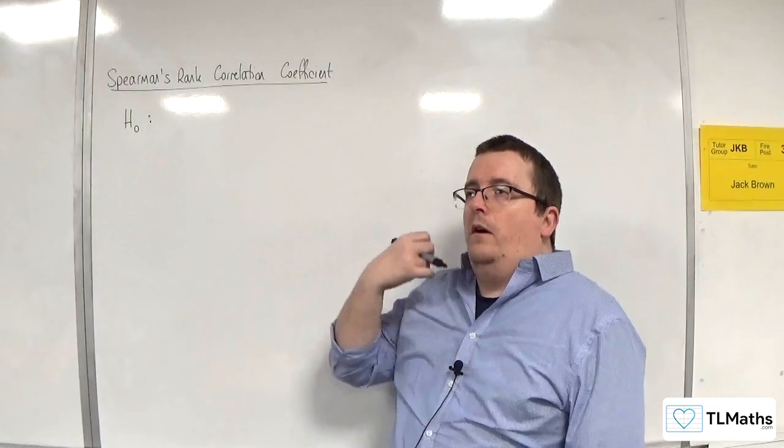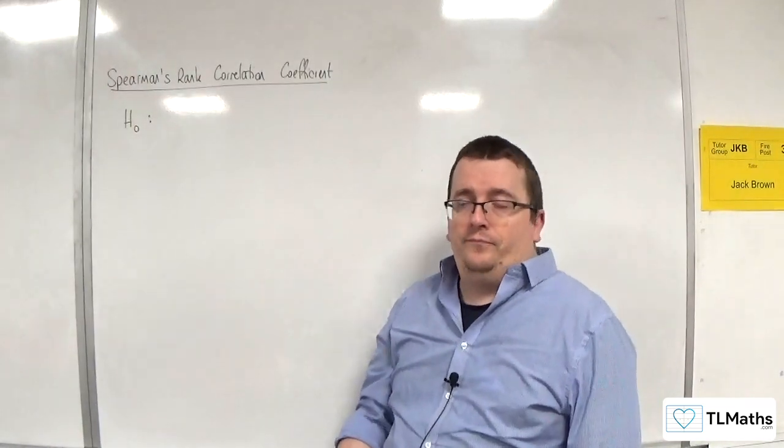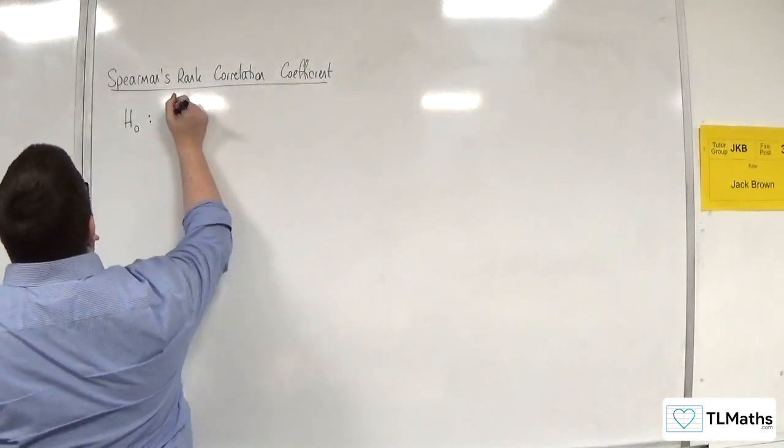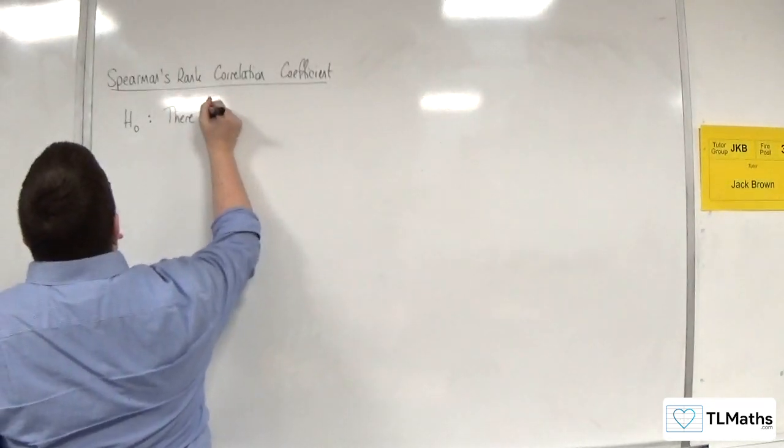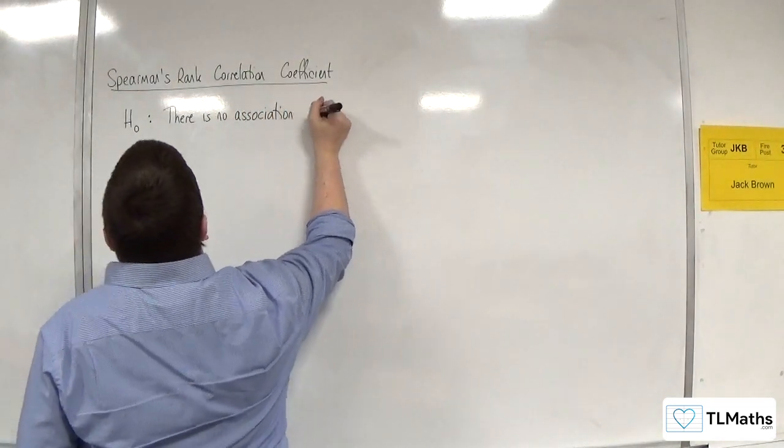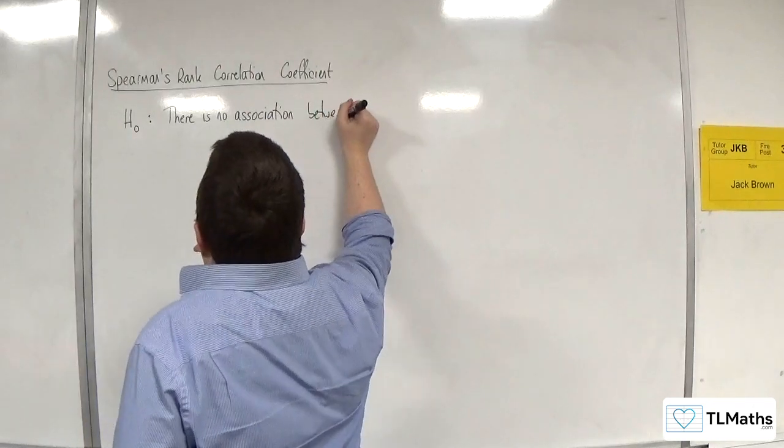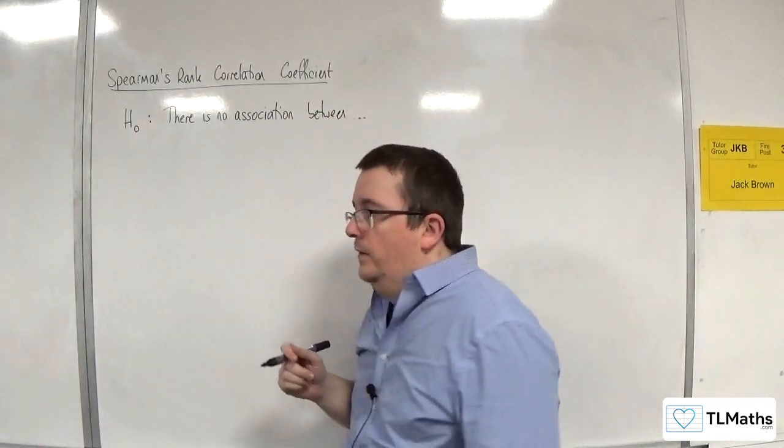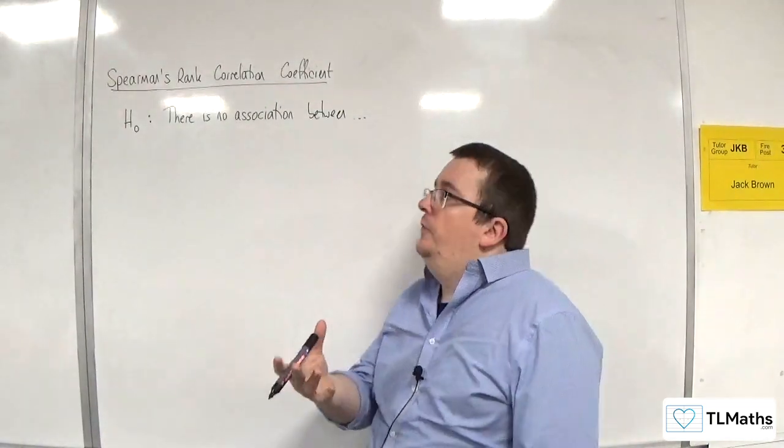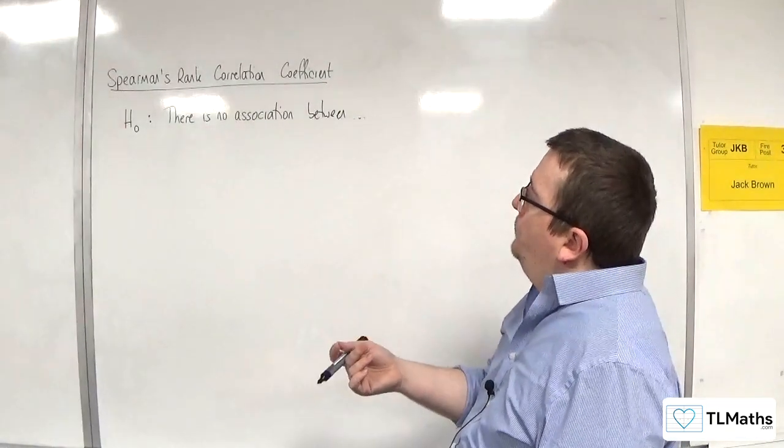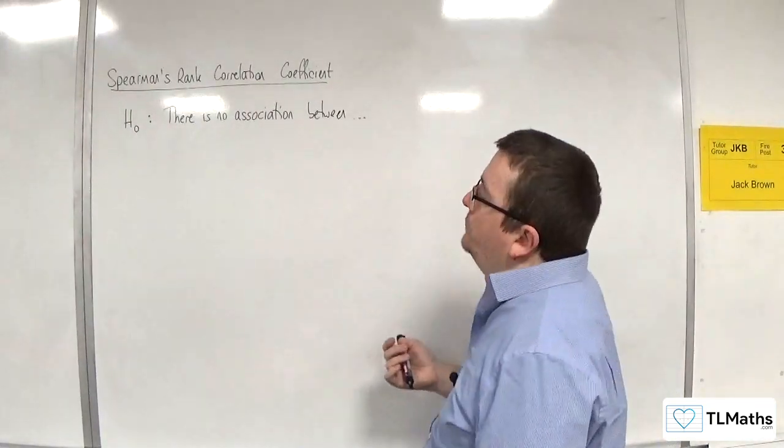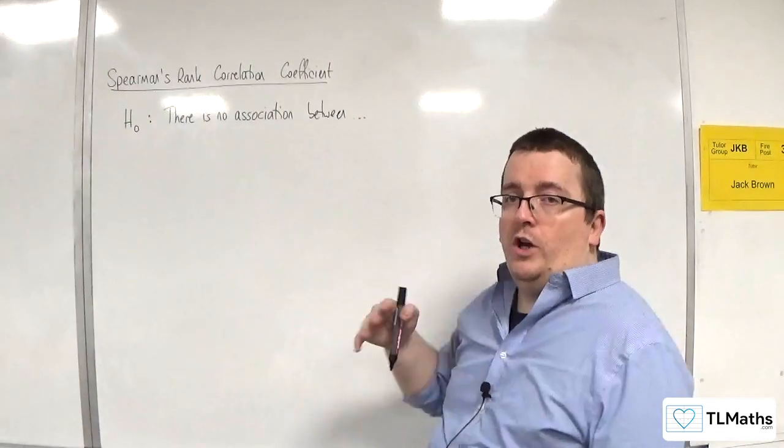Our null hypothesis will always be the same with the hypothesis test that we do, and we state there is no association between the two variables. We must write that in context, so if it's between the scores of the two judges, for example, or between the scores of judge A and judge B.